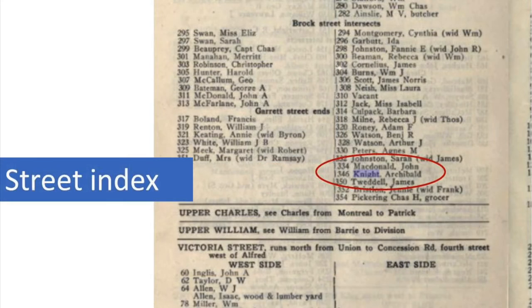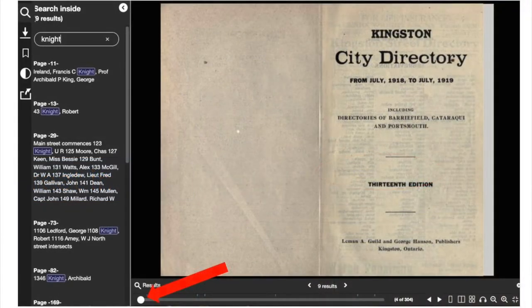In this instance the search result takes us to the street index of the directory. In this part of the directory, residents are listed according to their street addresses. The odd numbered houses are in the left-hand column and the even numbered houses are on the right.